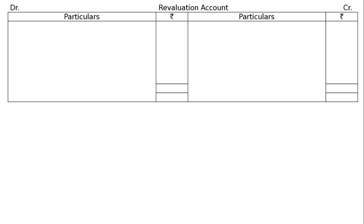Now, revaluation account. Draw the format of a revaluation account. First entry: by investments Rs 2,000 — investments are valued at Rs 10,000, previously it was Rs 8,000. By investments Rs 2,000, this will become Rs 10,000 and will be taken by X. Next one is typewriter Rs 1,000 — typewriter is to be depreciated by 20%. Typewriter is appearing at Rs 5,000, so 20% is Rs 1,000. Decrease in asset — depreciation of an asset is an expenditure and will be shown on the debit side of the revaluation account.